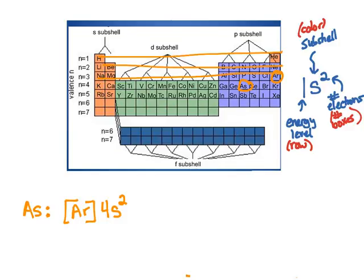So, I'm always going to put one less than the row that I'm in when I get to D. So, I do 4s². Then, when I get to D, I have to remember, hey, that's one energy level back. And put a 3 in front. D. Count how many boxes. I get 1, 2, 3, 4, 5, 6, 7, 8, 9, 10 boxes. That is 10.